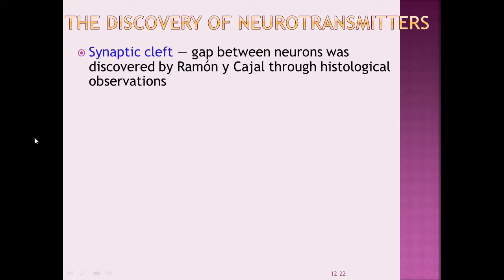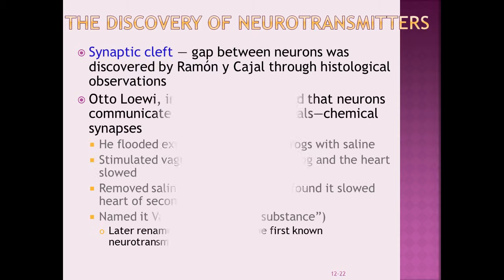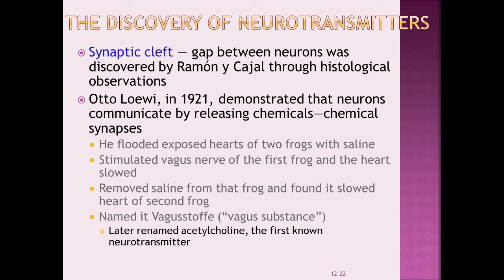When we look at the synaptic cleft, there's a gap between neurons discovered by Ramon y Cajal. Back in 1921, Otto Loewi demonstrated that neurons communicated by releasing chemicals through the chemical synapse. He tested two frog hearts and flooded them with saline. When he stimulated the vagal nerve of the first frog, the heart slowed down. He removed the saline and found it slowed the second frog's heart too, terming it 'vagus substance,' later renamed acetylcholine — the very first known neurotransmitter.